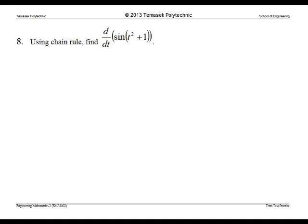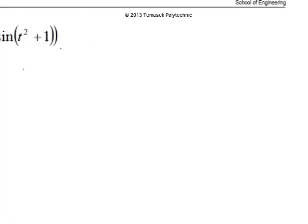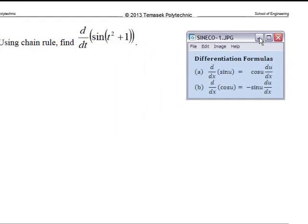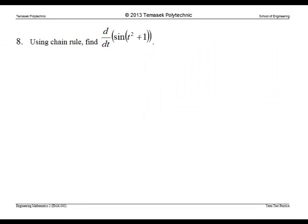In question 8, we are asked to use chain rule to find this derivative. This is the derivative formula for sine u. It is cosine u du/dx. So in this question, t squared plus 1 is u.